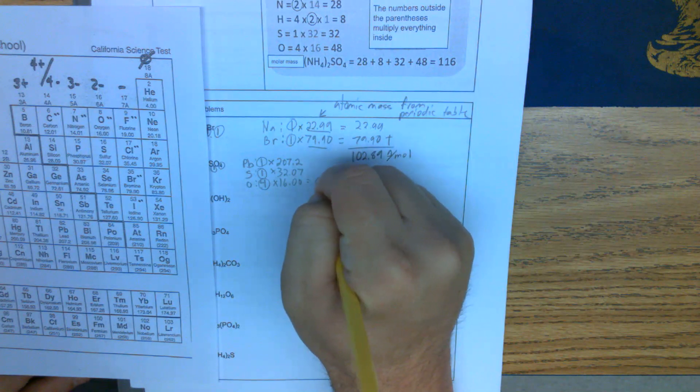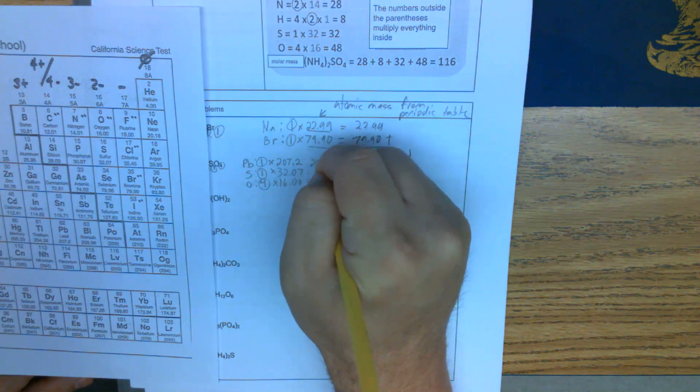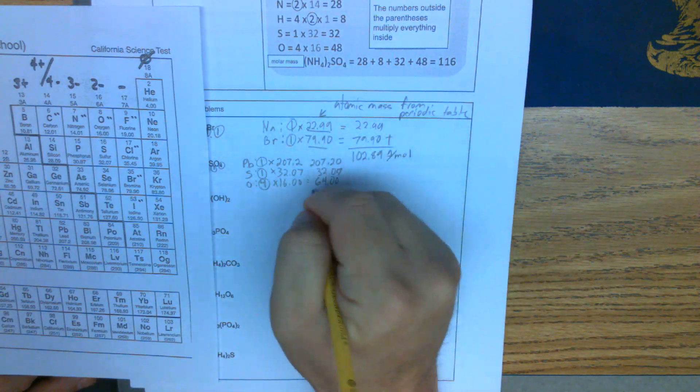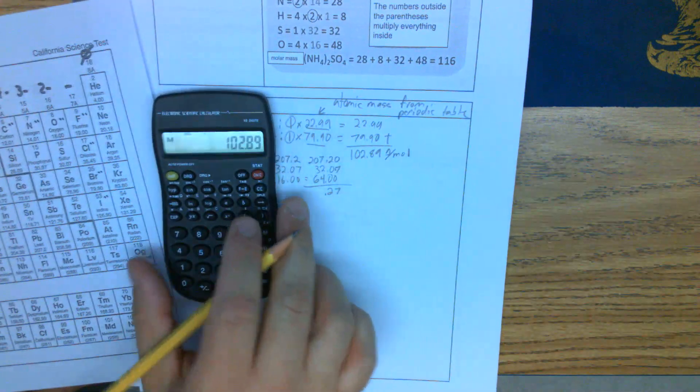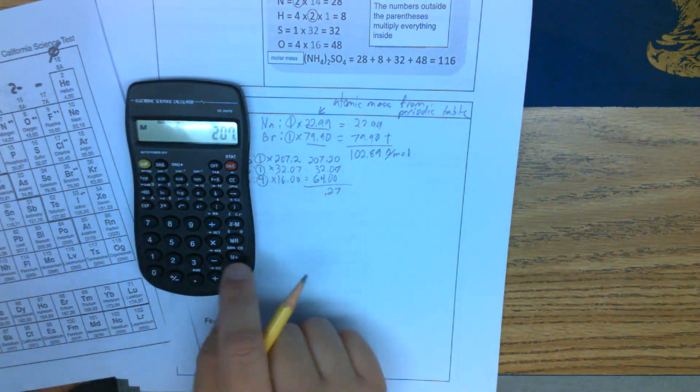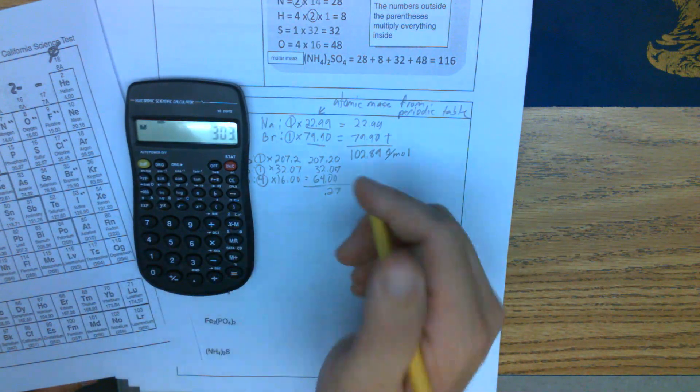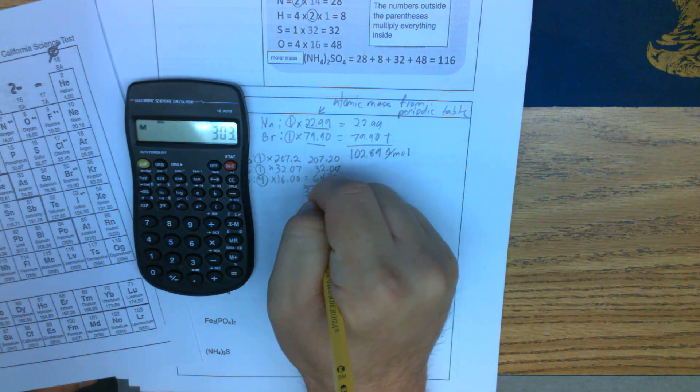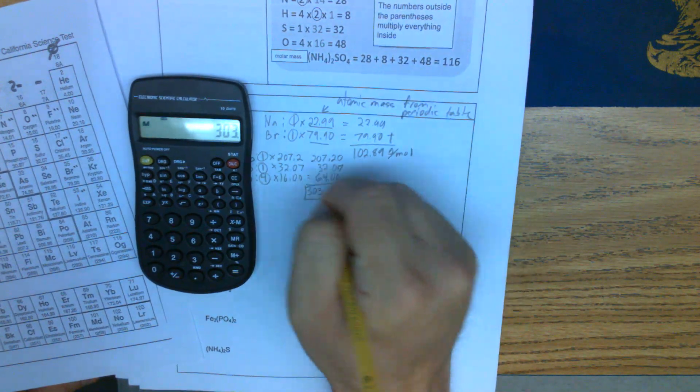So we multiply this out. We're going to get 64.00, 32.07, and then 207.20. If we add these up, we just do 207 plus 32 plus 64. We'll get 303.27 grams per mole. This would be the correct mass.